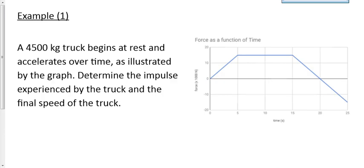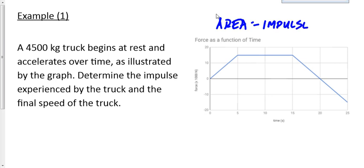Here's example number one. First, I look at the graph and see it's a force versus time graph. Before I even read the question, I automatically think: area equals impulse. I might even want to write that down, because as I read the question, I might forget that standard area equals impulse step.